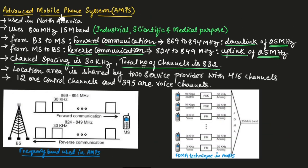Now let us understand advanced mobile phone system, AMPS, the technology used in first generation cellular communication. AMPS was first used in North America and used the 800 megahertz ISM band, where ISM indicates industrial, scientific, and medical purpose. The communication from base station to mobile station is known as forward communication, or downlink, and it used the frequency range from 869 to 894 megahertz, giving a bandwidth of 25 megahertz.